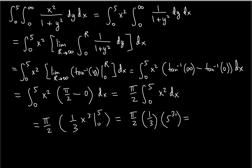Five to the third is 125, so 125 multiplied by pi over six — combining one third with the pi over two — gives us 125 pi over six. This is the resulting value of the improper double integral. I hope this was fun and useful — thanks for watching, see you in the next video.